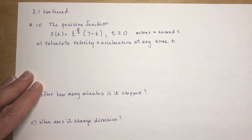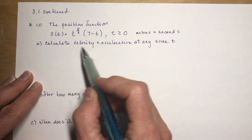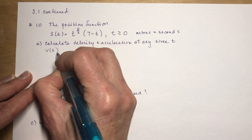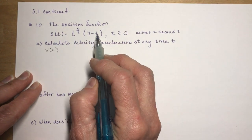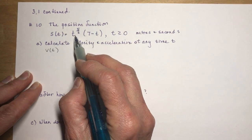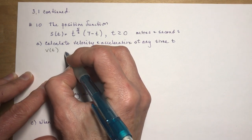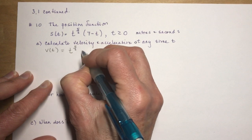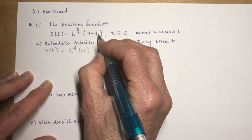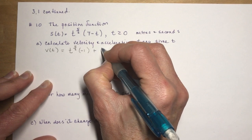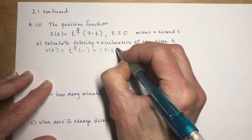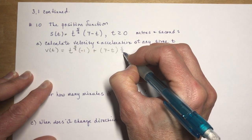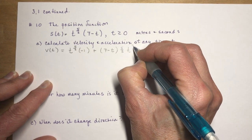At any time t I need to find the derivative. For the velocity, v(t) = s′(t), I take the derivative. This is a product because it's t to the 5/2 times the other factor. So: first term t^(5/2) times the derivative of the second, which is negative 1, negative t, plus the second term times the derivative of the first, which is (5/2)t^(3/2).